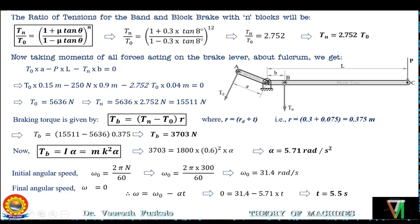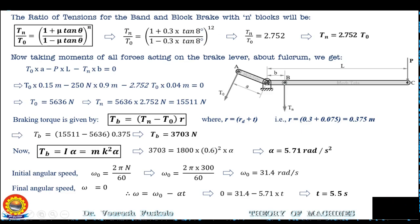So these are the two numericals in which you have learned to calculate the least force to be applied on the lever, the braking torque, the angular retardation, and the time taken by the system to be stationary. I hope you have understood how to make the various calculations in case of band and block brake. Please do practice some more problems from your textbook, and in case of any doubt, feel free to contact me. Thank you.